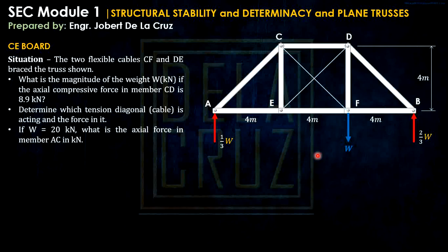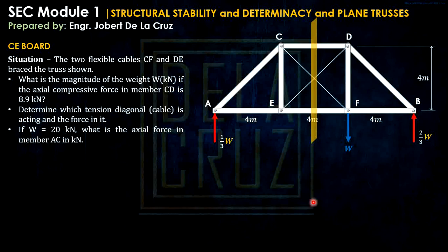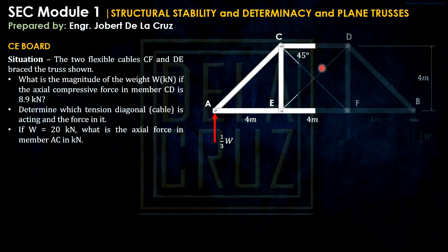Our mission is to determine which cable is functioning. We cut the truss to expose the two cable forces. We choose the left section because the loading is simpler there. Note this angle is 45 degrees because both the rise and run are 4, so the diagonal is at 45 degrees.